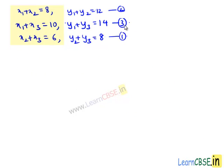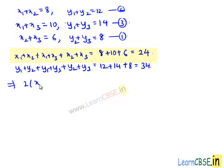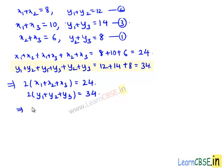Now, summing up equations 1, 2, and 3, we get x2+x3 + x1+x2 + x1+x3 = 8+10+6, and similarly y2+y3 + y1+y2 + y1+y3 = 12+14+8 = 34. This implies 2(x1+x2+x3) = 24 and 2(y1+y2+y3) = 34, which gives x1+x2+x3 = 12 and y1+y2+y3 = 17. Let it be equation number 4.